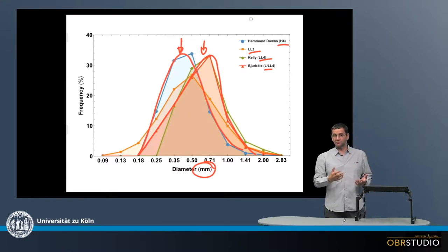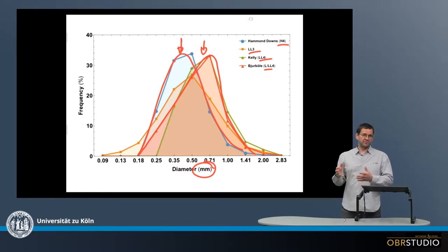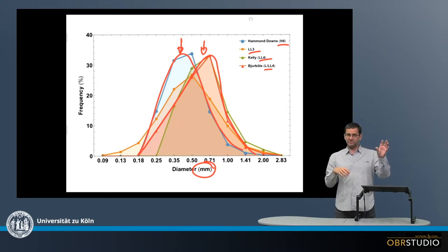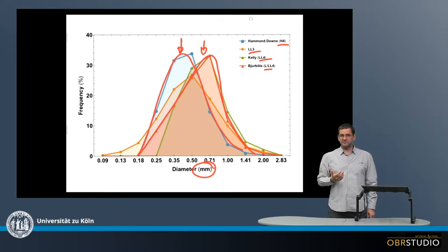Another possibility would be that the chondrule precursor aggregates had various sizes, so the agglomeration of the precursors were more or less efficient, producing larger and smaller precursor aggregates, or that during chondrule formation the evaporation of material produced smaller chondrules. Chondrules that were at larger temperatures for prolonged times evaporated more and got smaller.